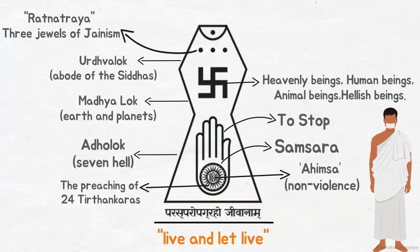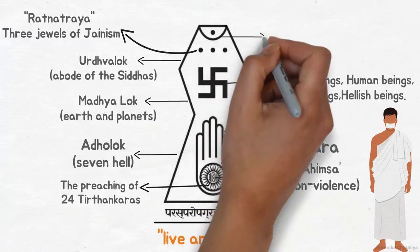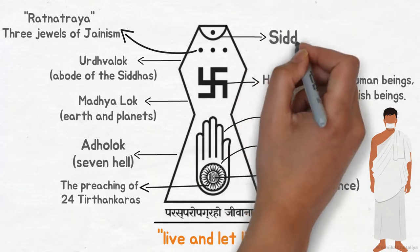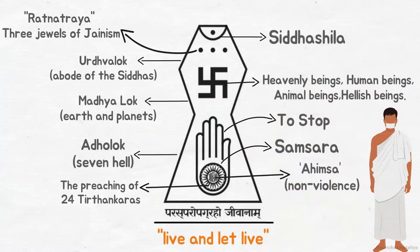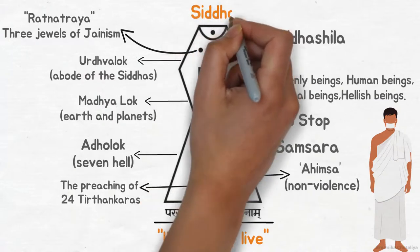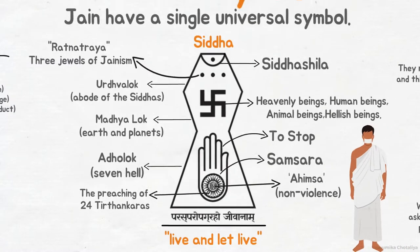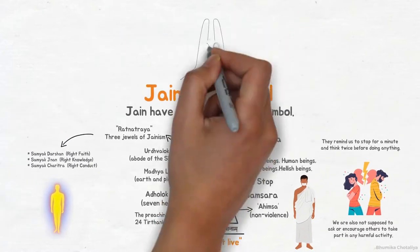At the very top part of the Jain symbol is a small arced curve. This arc represents the abode of the Siddhas, known as the Siddhasila. It is the final resting place of the liberated souls. The dot represents a Siddha. In order to achieve this stage, a soul must destroy all attached karmas. Every living being should aspire to reach the stage of salvation or liberation.